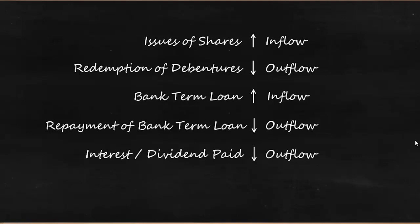When you pay interest or dividend, the cash goes out and it's an outflow. Interest and dividend paid are shown as outflow and they have a negative balance — they are deducted because in operating activities we have added them back. So the idea of adding them back in operating activities is to show them as a deduction in financing activities.